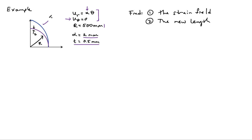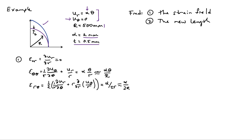So let's start with the first question which is what are the strains? We can use our strain displacement relations in polar form. So the normal strain in the radial direction is going to be the derivative of u_r with respect to r. And u_r doesn't depend on r so we get zero normal strain in the radial direction even though we have motion in the radial direction.